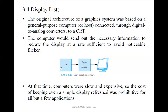This figure depicts the early graphic system in which a host — our computer system — is connected with the digital-to-analog converter. Its job is to convert the digital signal into analog signal. Digital signals are zeros and ones; analog signals are sinusoidal signals. That analog signal is sent to the monitor so the electron beam strikes on the phosphor-coated screen. At that time, computers were slow and expensive, so the cost of keeping a simple display refresh was prohibitive for all but a few applications.